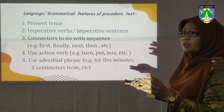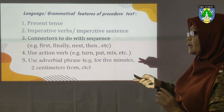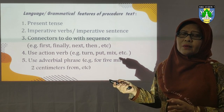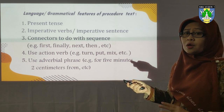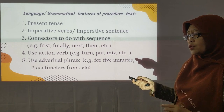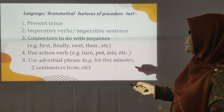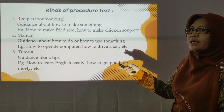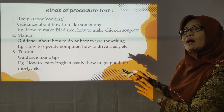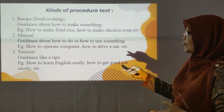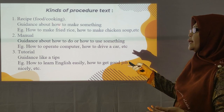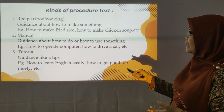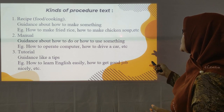For more detail, let's see the samples. Actually, there are many kinds or procedure types. The first is food cooking — for example, how to make fried rice. This is guidance about how to make something, such as how to make fried rice or how to make chicken soup. The second type is manual — guidance about how to do or how to use something, not to make food, but for example how to upgrade a computer or how to drive a car.